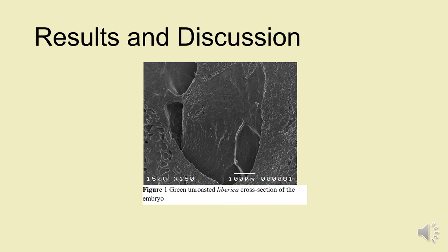Next up is the results and discussion. This is a quick look at the green unroasted Liberica cross section. As you can see, the embryo, the central structure here, this part right here is clearly very solid. It's a solid mass. It has no holes. It's not very porous as compared to the surroundings, which is the rest of the bean. I'll pull up a better picture in a bit, which is a bit porous.